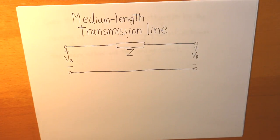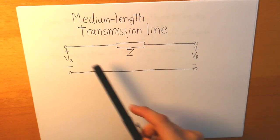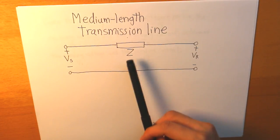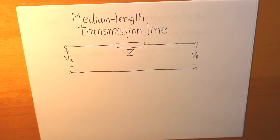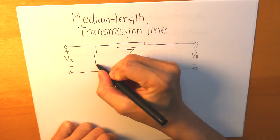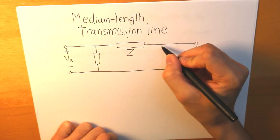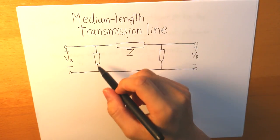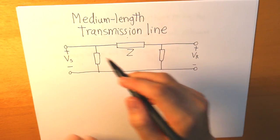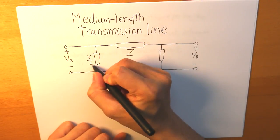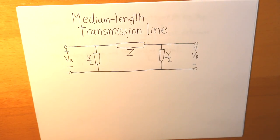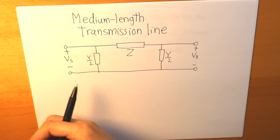A medium length consists of a pi model where we have two extra components that is connected between, for one, Vs and Z and the other one is Z to Vr. So we have another bar right here and then another one and these two bars, both of them are simply y over 2 and y stands for admittance. So this is our pi model.